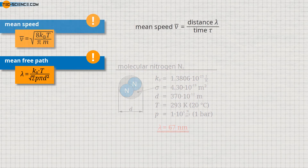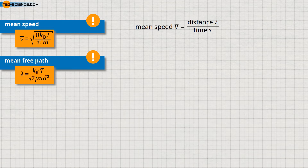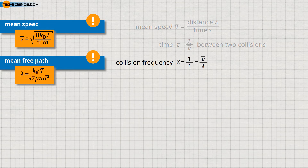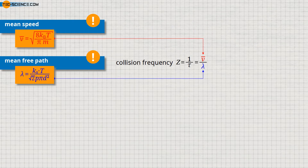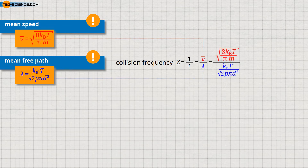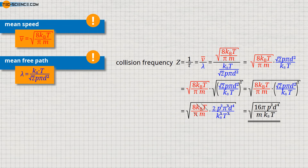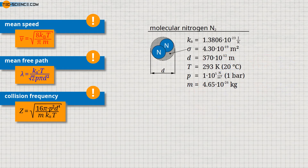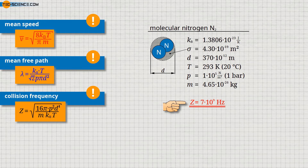With the mean free path and the mean speed of the molecules, the mean time period τ between two collisions can now also be determined. This mean time indicates the repetitive time intervals in which collisions occur on average. Therefore, the reciprocal of this time period can be understood as the collision frequency f, which indicates the number of collisions per unit time — this collision frequency is often denoted by the letter Z. Using the formula for the mean speed and the formula for the mean free path, we can find the formula for calculating the collision frequency. For the nitrogen molecule at 293 Kelvin and 1 bar, a collision frequency of 7 × 10⁹ Hz results, meaning a single nitrogen molecule collides on average with 7 billion other molecules per second.